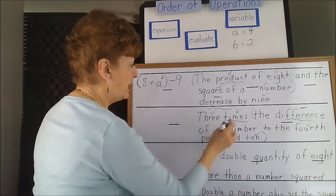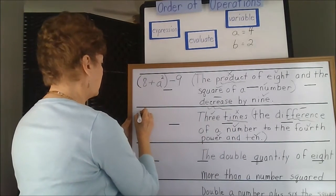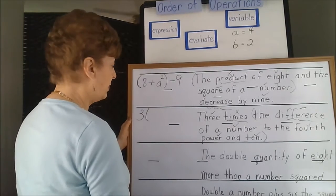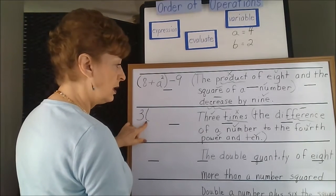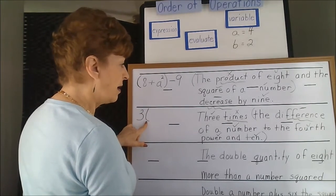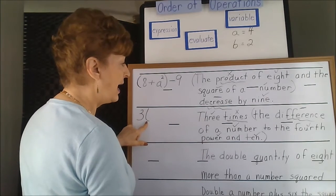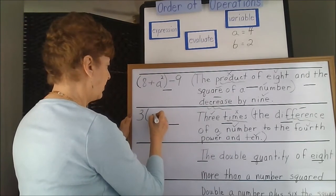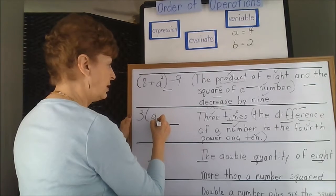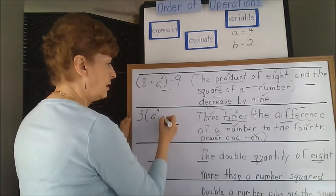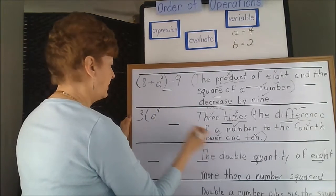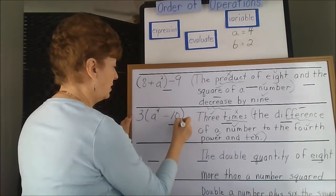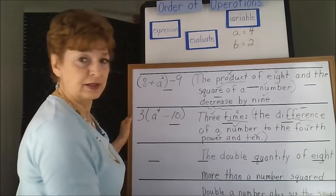So, 3 times the difference — we're going to go 3 times, here's our grouping symbol — the difference of a number to the 4th power and 10. In this case, we're going to have a number to the 4th power and 10. Here's our difference — that's how that would look.